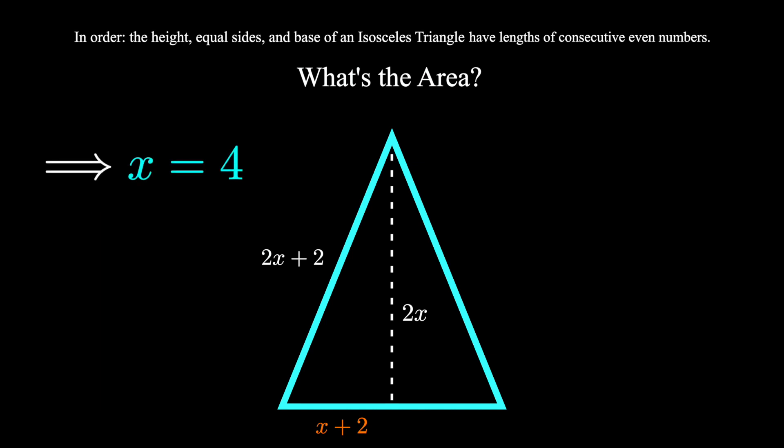Remember the side lengths were 2x, 2x plus 2, and 2x plus 4. The height has to be 8, the equal sides have to be 10, and the base 12.